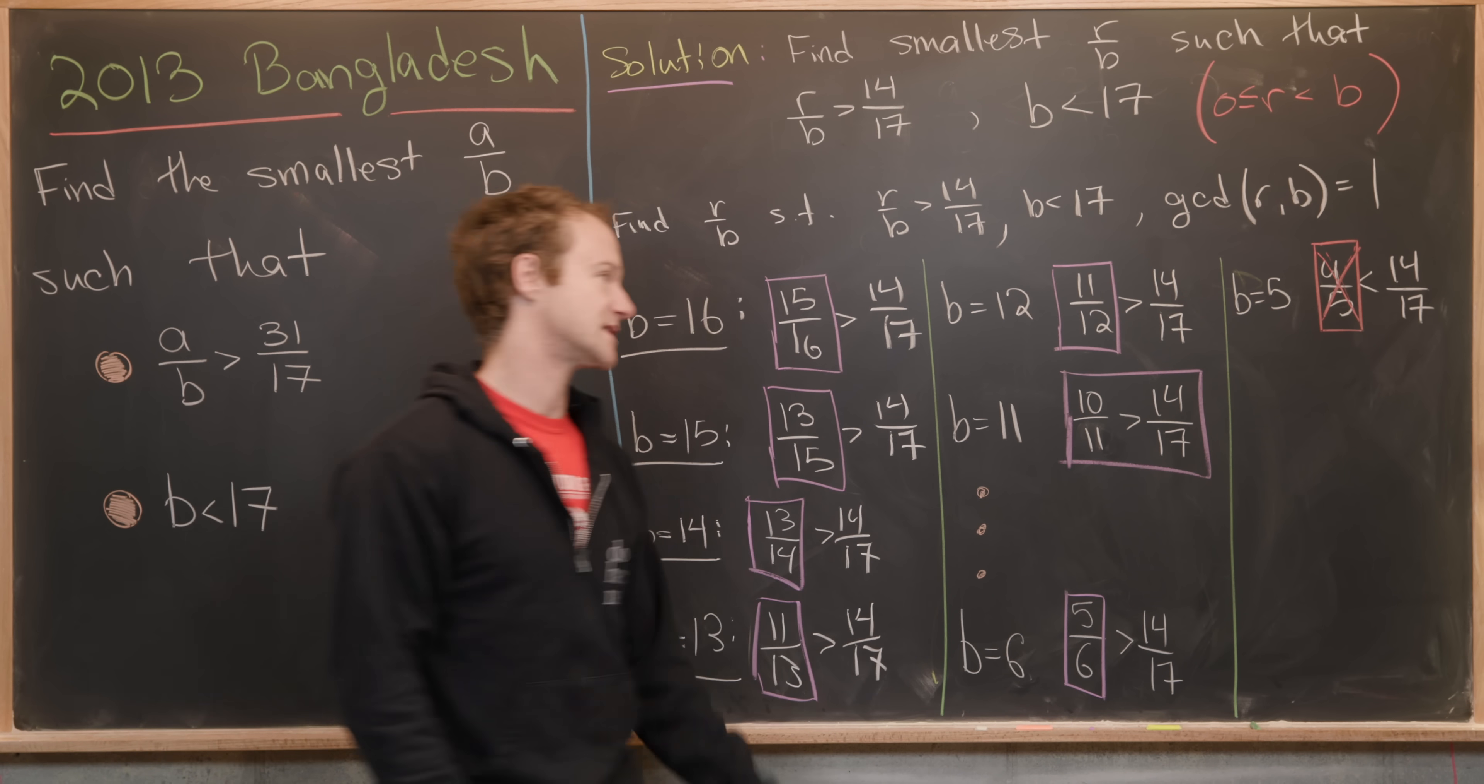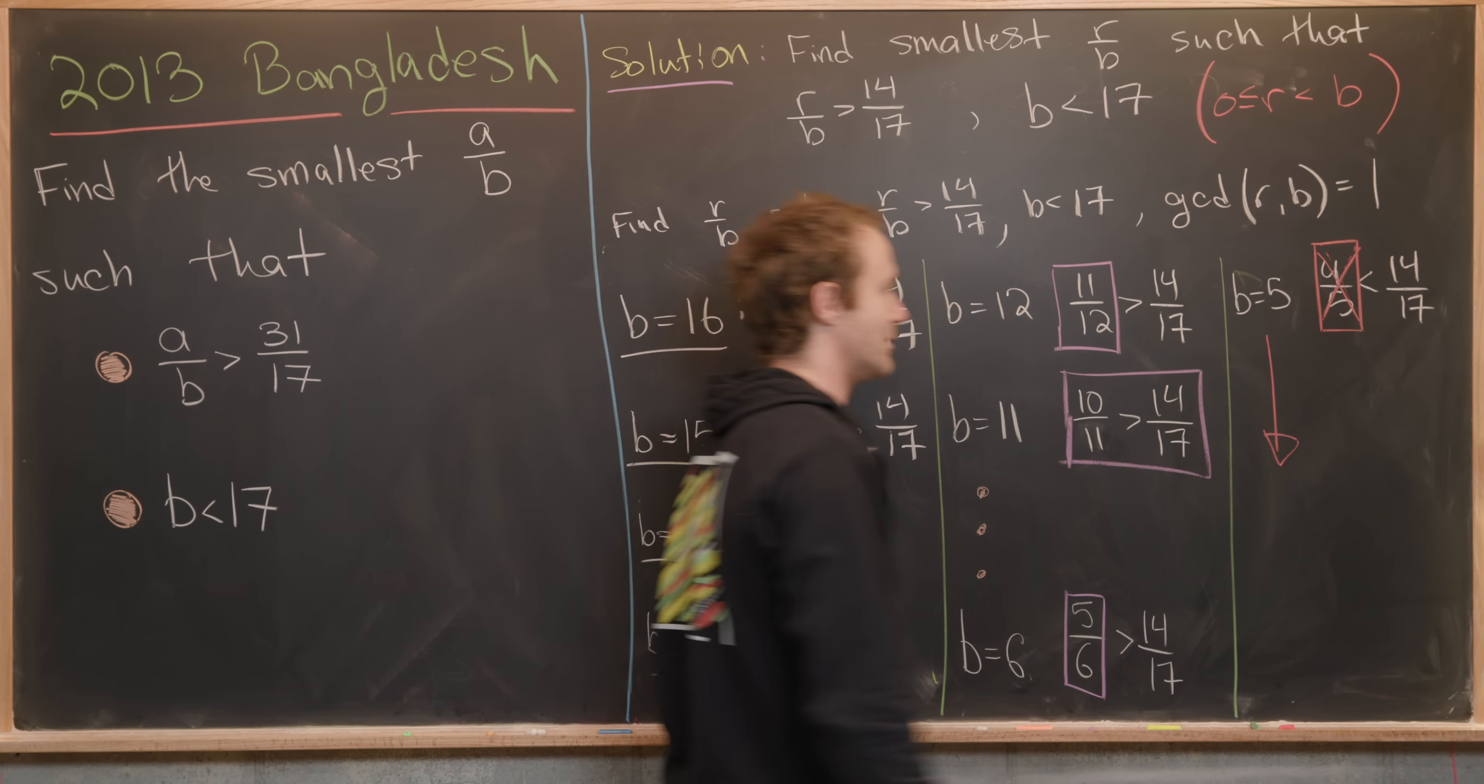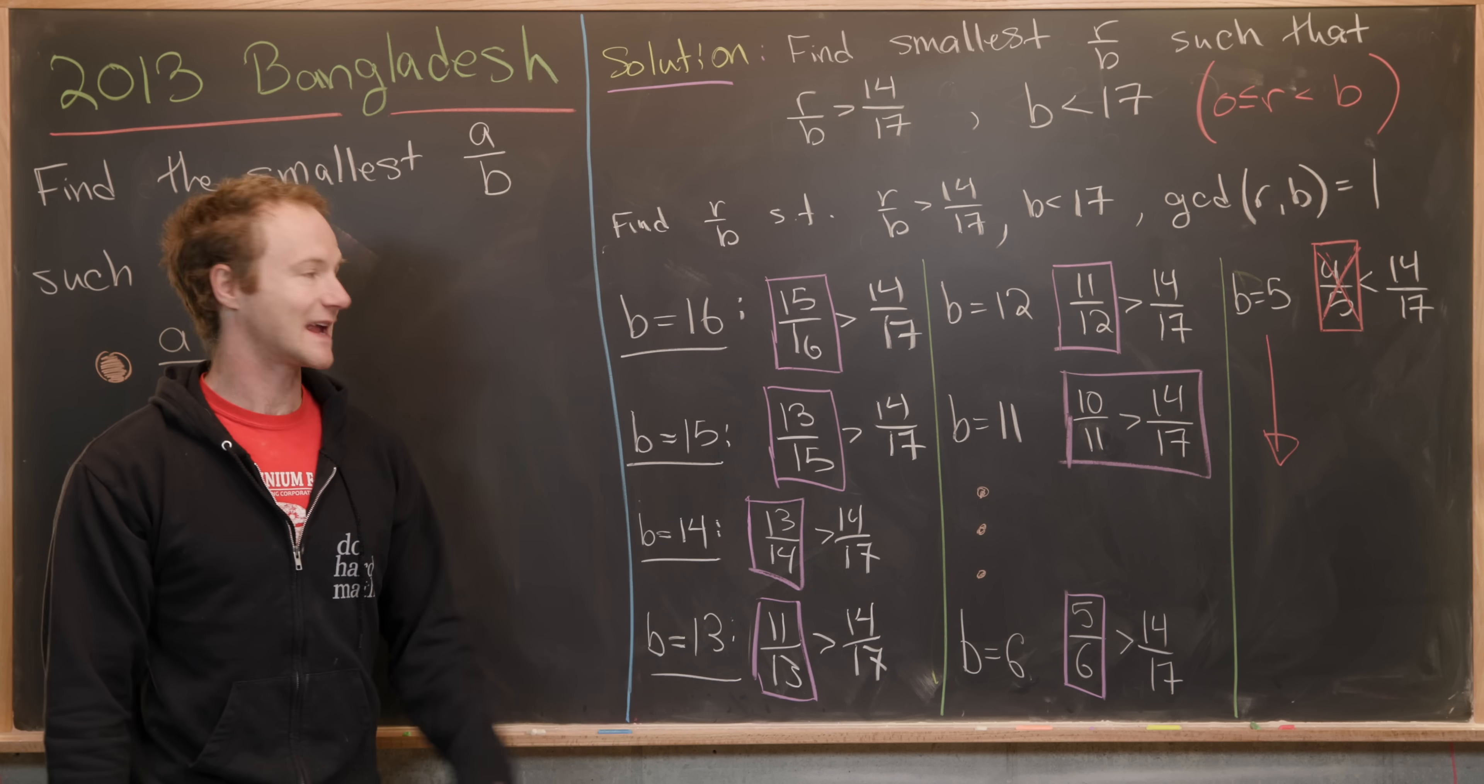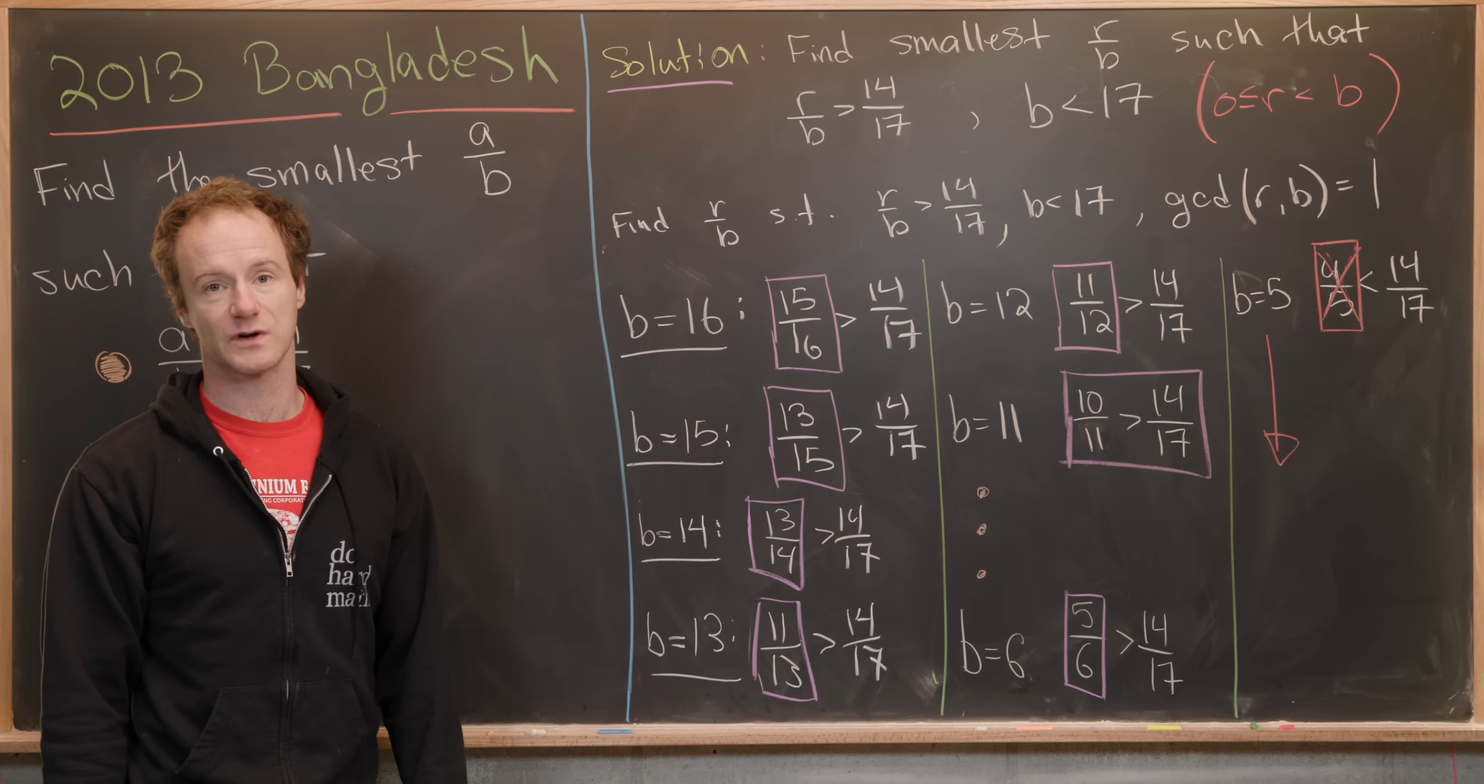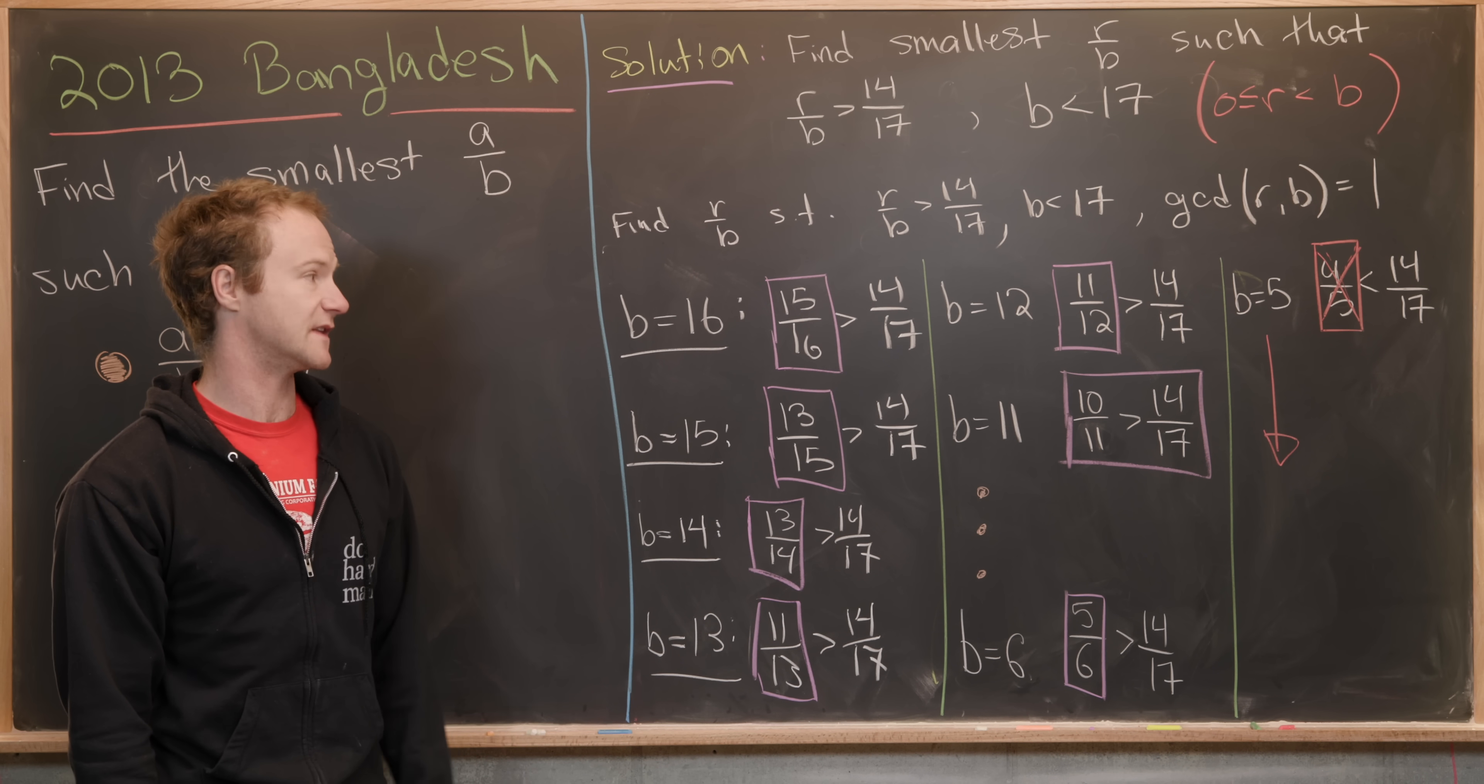What that tells us is that no smaller denominators will work either, they will not give us a fraction which is bigger than 14 over 17.